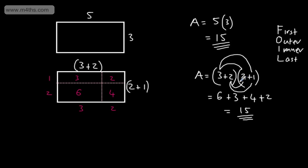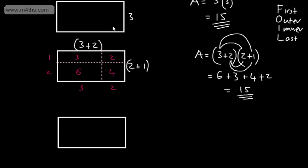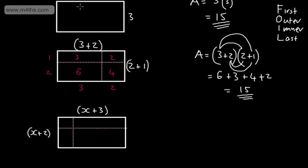Now let's look at it with an algebraic expression. The rectangle has length x plus 3 and width x plus 2. Drawing the grid, we split into x and 3 along one side, and x and 2 along the other. The area of the x-by-x square gives x squared.